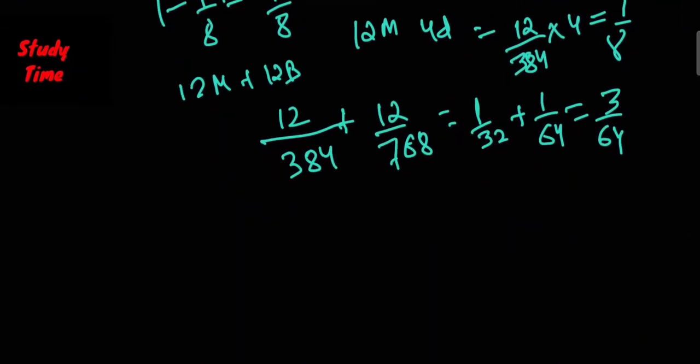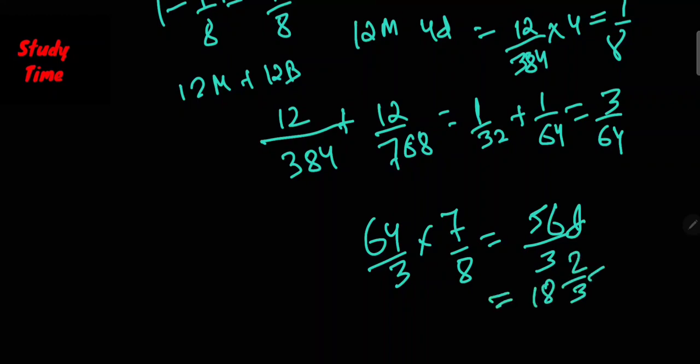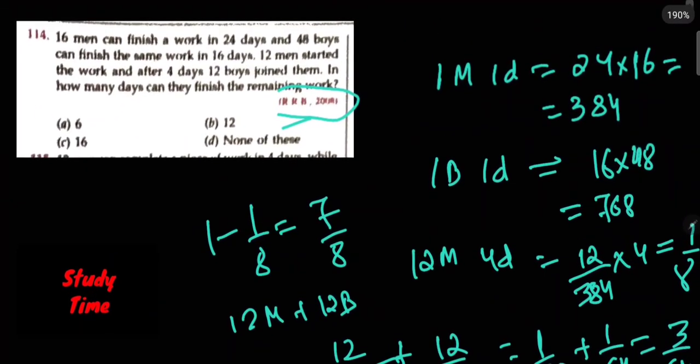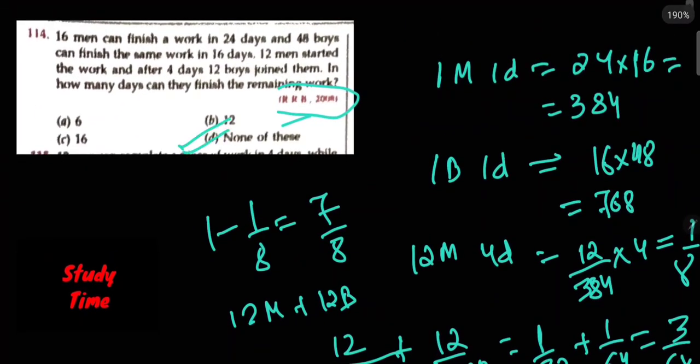So the 7 by 8 of the work done by them equals 64 upon 3 into 7 upon 8, which equals 56 upon 3 days, which is 18 and 2 by 3 days. So the answer is none of these options.